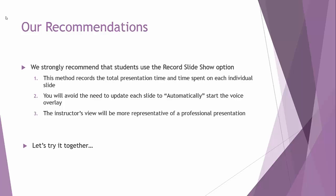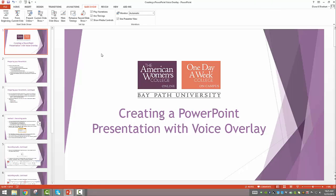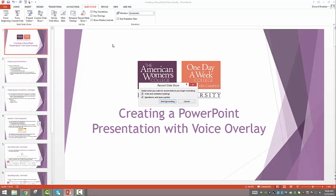Let's try this together with this current PowerPoint presentation and I'll show you how to record the slideshow. Using our current presentation as an example, our recommendation is to use the Record Slideshow option. We're going to go to the icon at the top of your screen, click on it to show the drop-down menu, and select 'Start Recording from Beginning.' After doing that, a box will come up that says 'Select what you want to record before you begin recording.' Uncheck Narrations and Laser Pointer, then hit Start Recording.